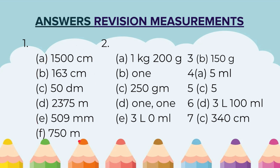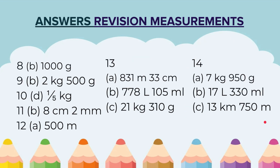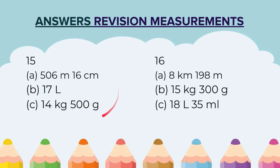Question 1 was the conversion question, Question 2 was fill in the blanks, Questions 3 to 12 were multiple choice questions, Question 13 was addition, Question 14 was subtraction, Question 15 was multiplication, and Question 16 was division. Check your answers, identify where you made a mistake, redo that question, and try to correct yourself.